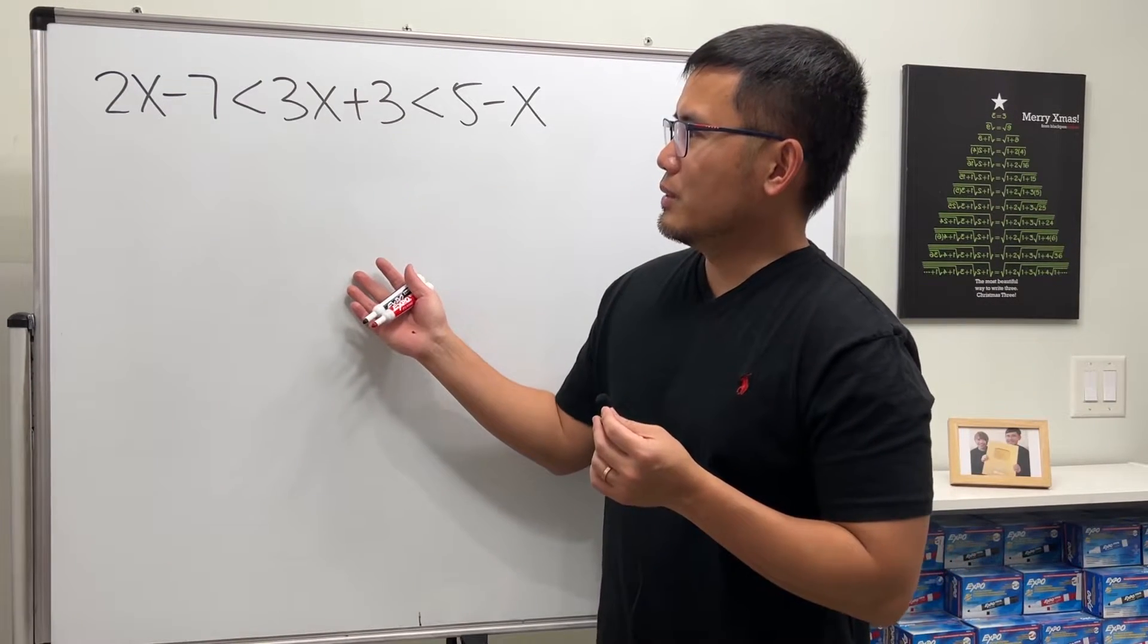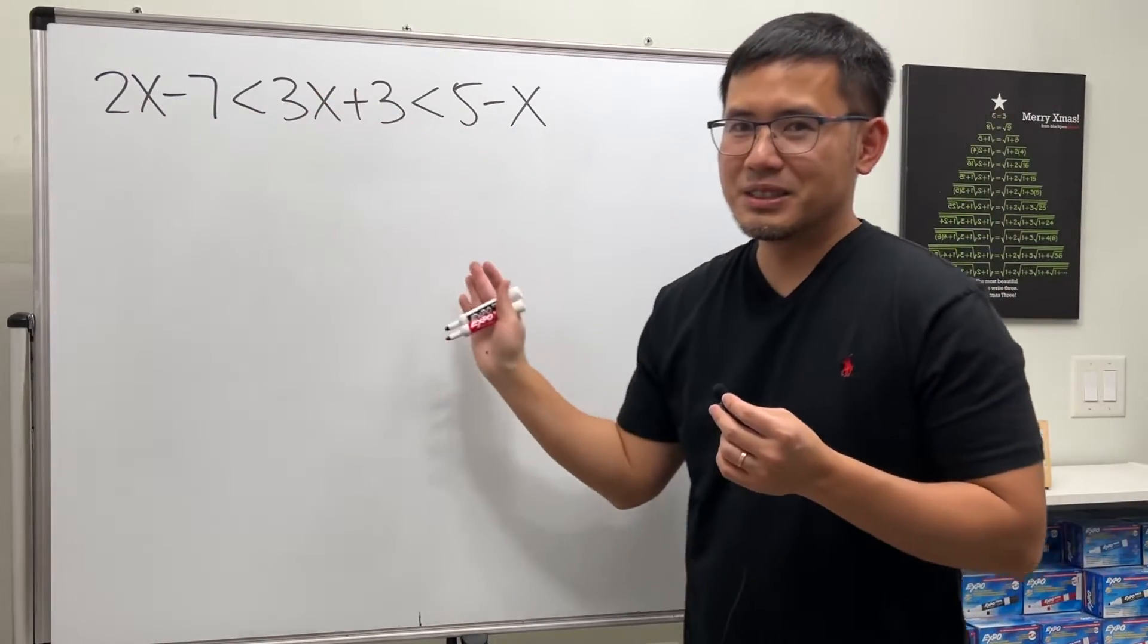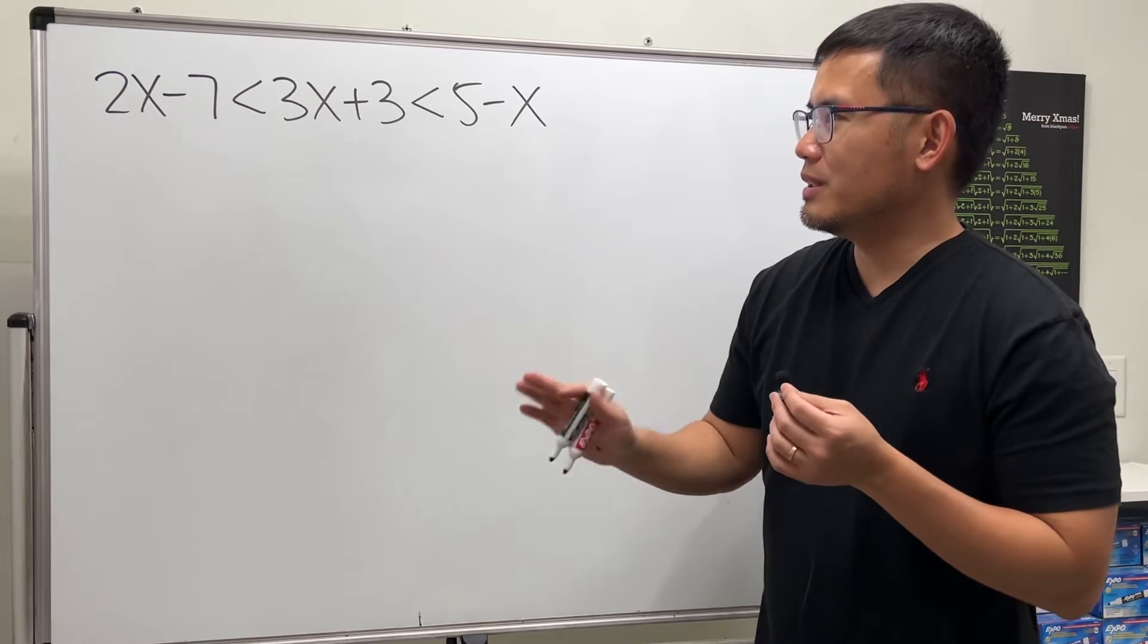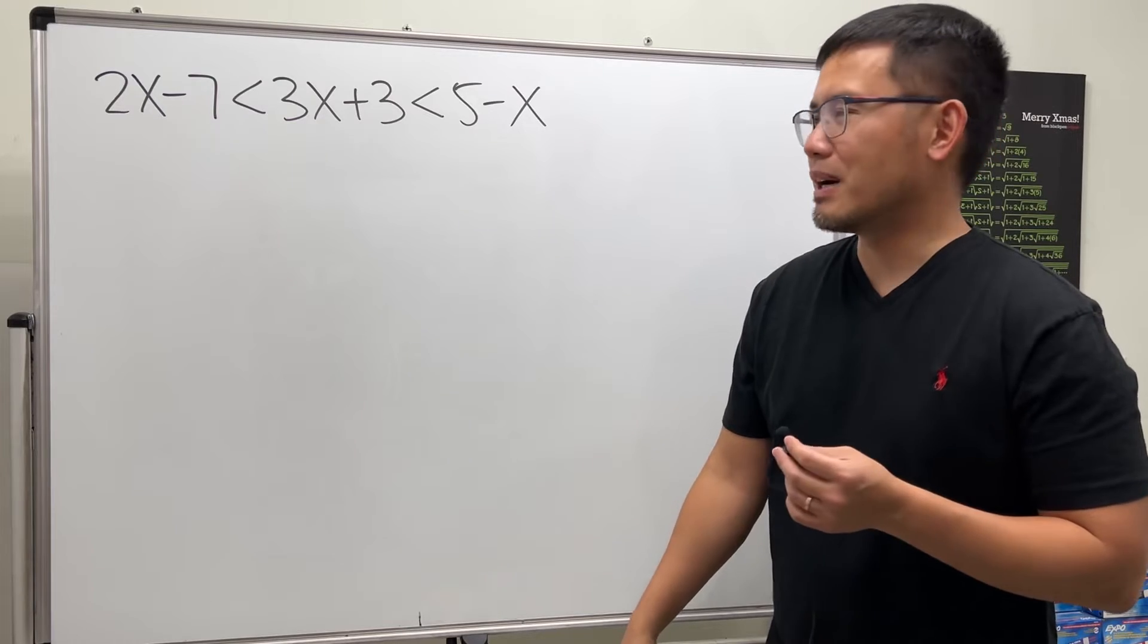So if you take a look, it's like we have x's on all three parts. So we cannot really subtract x's and all that, right? You have to do it carefully, it's possible.